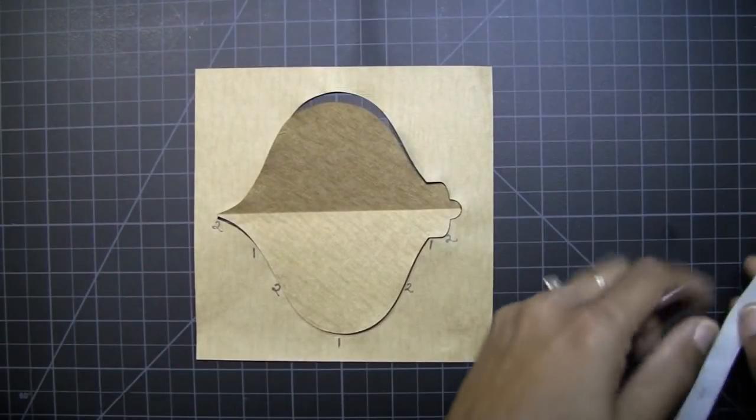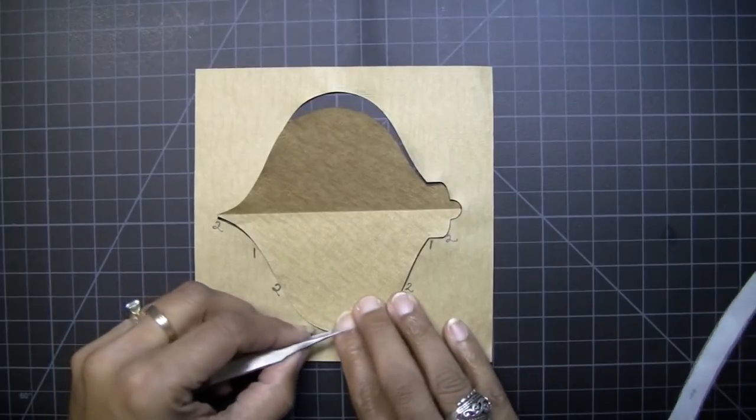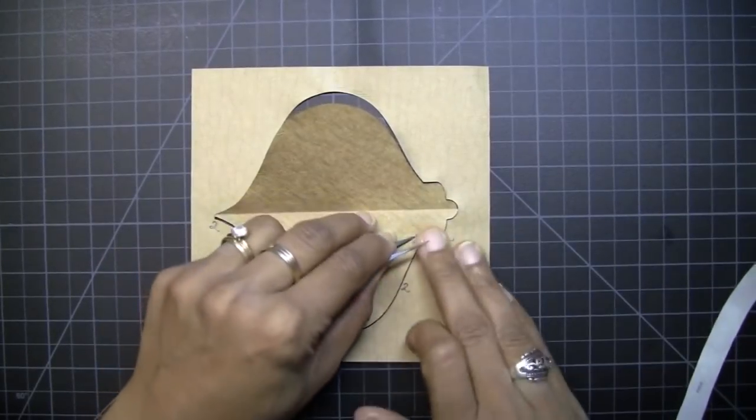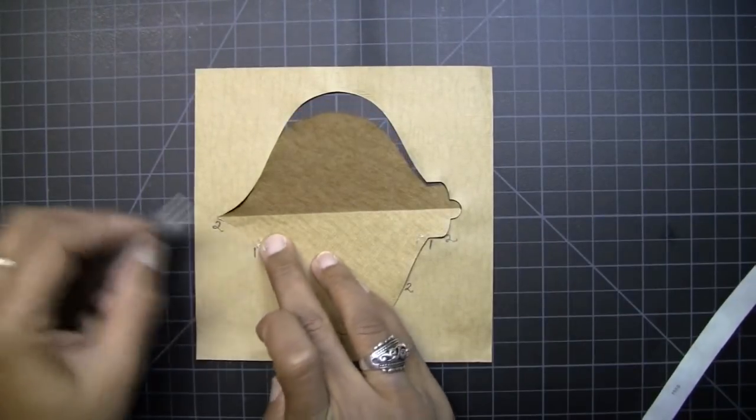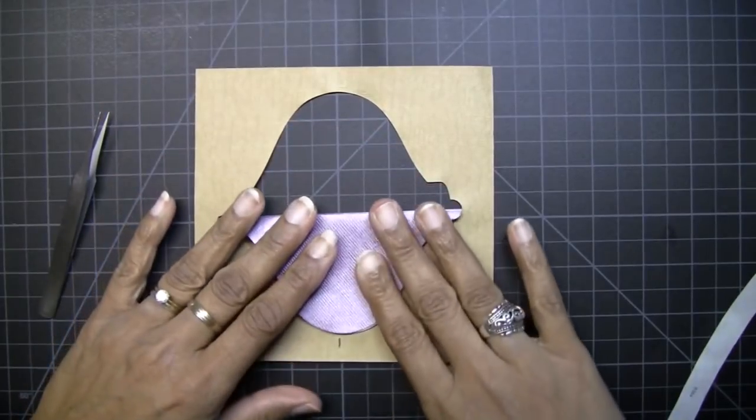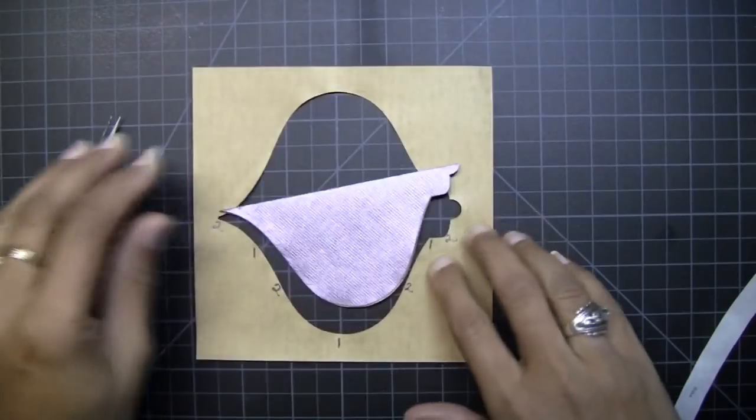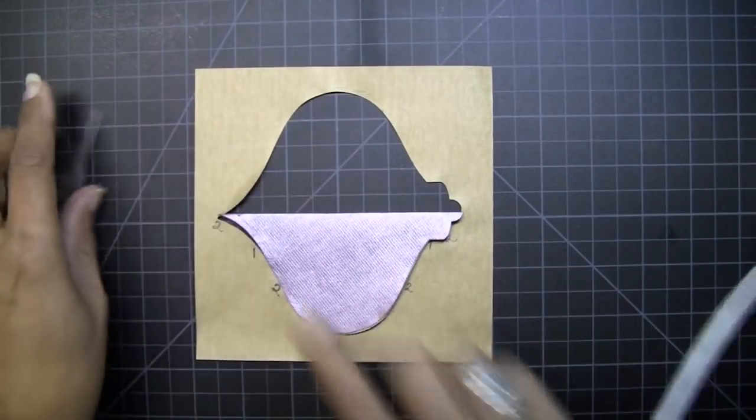And again, I'm going to put glue dots everywhere that it says number one. Here, here, and here. And then I'll close that, sandwich in the glue dots, and I'm going to put another set of glue dots everywhere it says two.